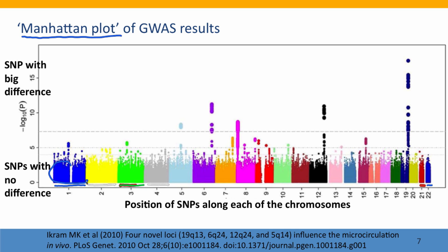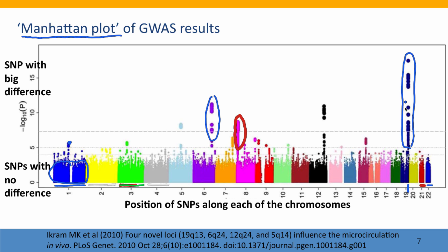All of these dots down near the baseline on chromosome 1 are SNPs where the differences between the tall and short people in their allele frequencies are very minor. Here are some dots where the differences are stronger — the same for chromosomes 2 and 3. Here in chromosome 6 we see a cluster of SNP positions that are very significantly different between tall and short people. Here's another cluster on chromosome 8. And here on chromosome 19 is a cluster of SNP positions near one end of chromosome 19 where tall and short people have really different allele frequencies — a very strong candidate for a position in the genome where DNA sequence differences affect height.